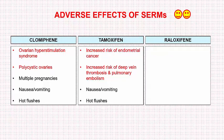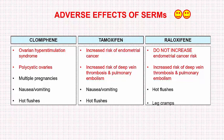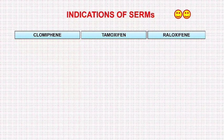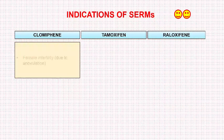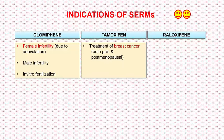Raloxifene does not cause increased endometrial proliferation; therefore, it does not carry an increased endometrial cancer risk. However, there is an increased risk of deep venous thrombosis and pulmonary embolism. It may also cause hot flashes and leg cramps. Lastly, we talk about the indications of Clomiphene, Tamoxifen, and Raloxifene. Clomiphene, because it stimulates the ovaries, is used in female infertility due to anovulation. It is also used in male infertility and in vitro fertilization.